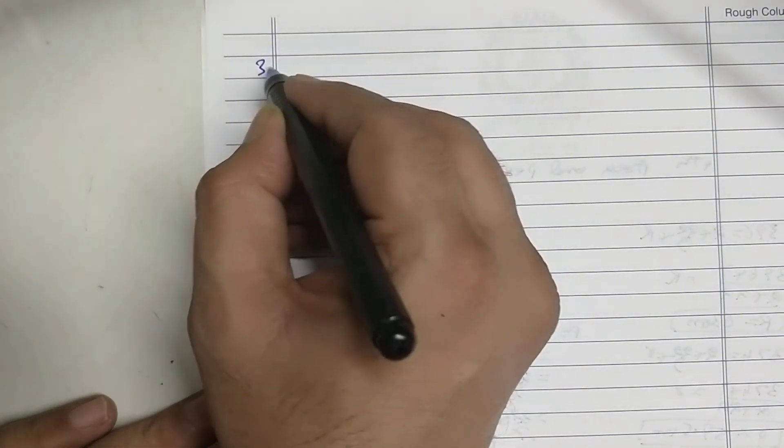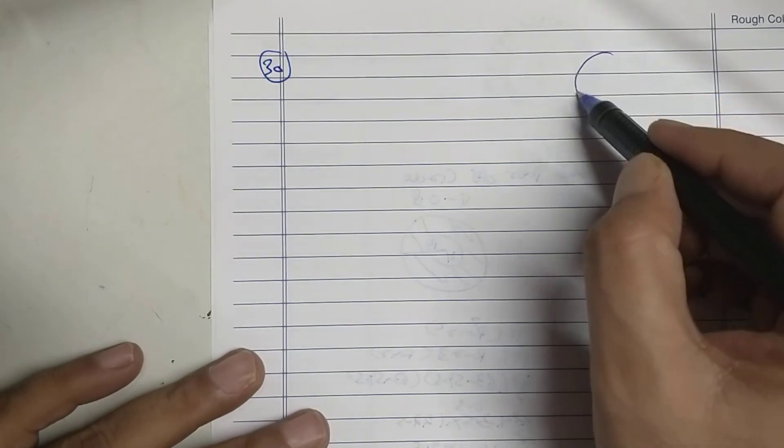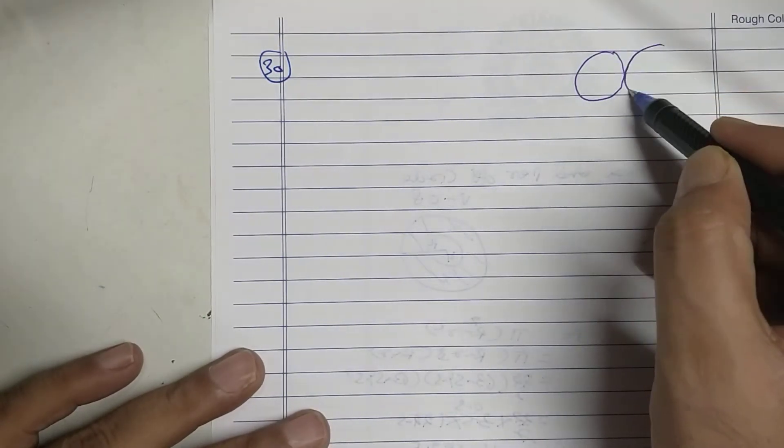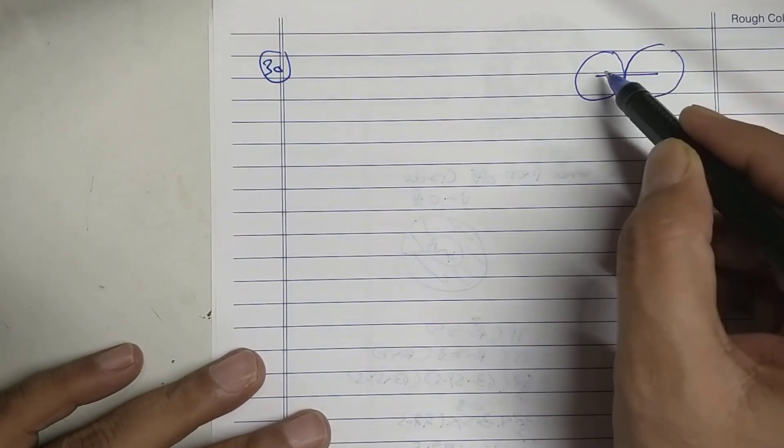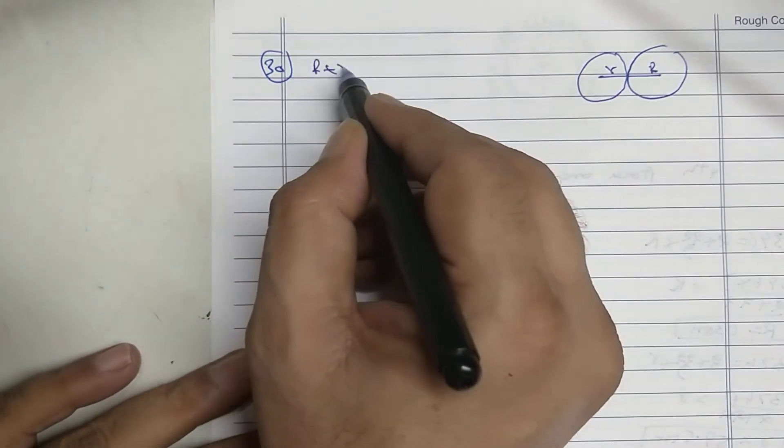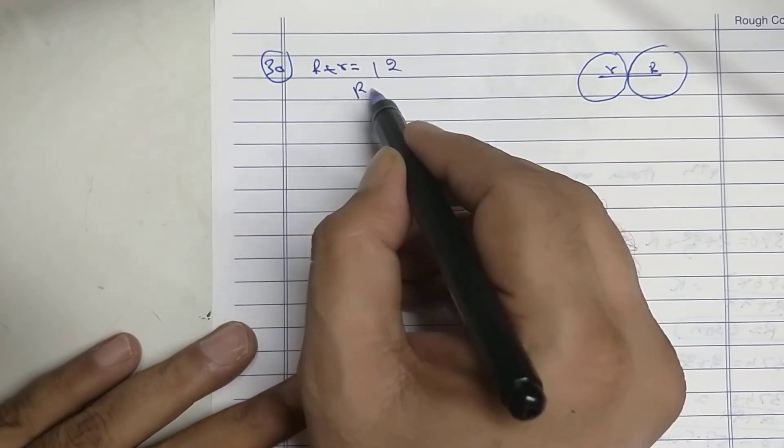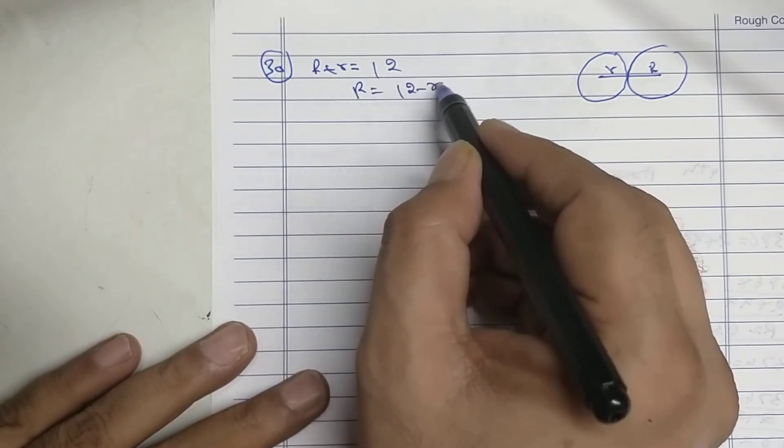Sum number 30. Two circles touch each other externally. This is small r, this is big R. So r plus r is 12, so r equal to 12 minus small r.